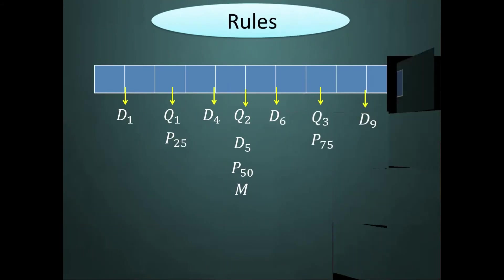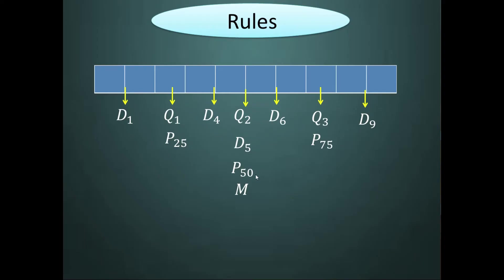Under the Mendenhall and Sinscih method, we apply the following rules. We know that Q sub 2, D sub 5, and P sub 50 are all equal to each other because these measures of position are placed at the middle — they are all equal to the median of the distribution.